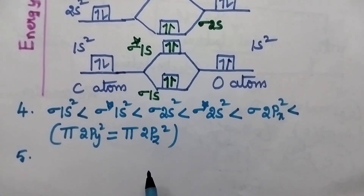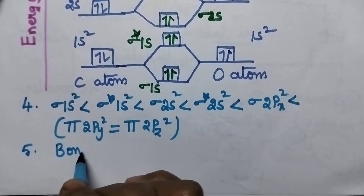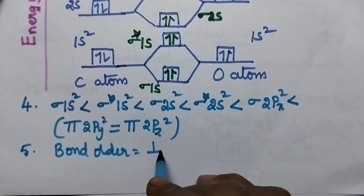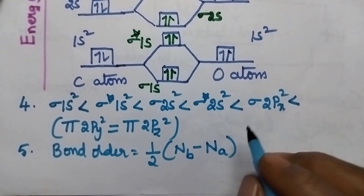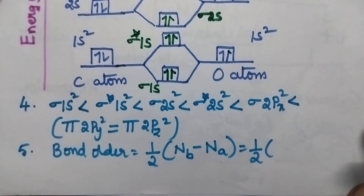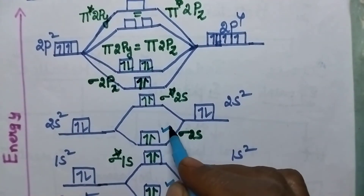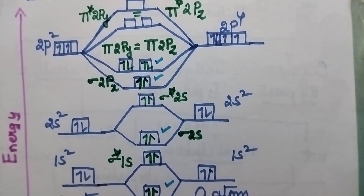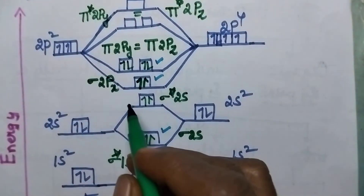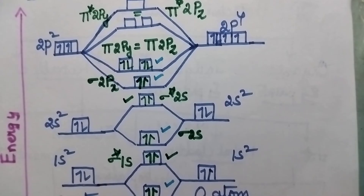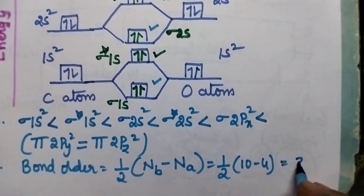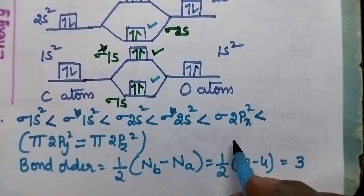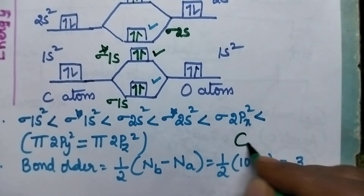Coming to the bond order, it can be calculated using the formula: bond order = half × (number of electrons in bonding orbitals minus number of electrons in antibonding orbitals). Here 10 electrons are present in the bonding orbitals (2 + 2 + 4 + 2 = 10) whereas only 4 electrons are present in antibonding orbitals. So bond order = half × (10 − 4) = 3, meaning a triple bond is present between carbon and oxygen.